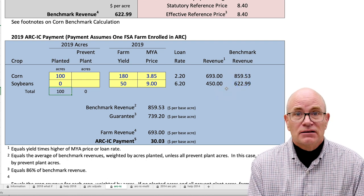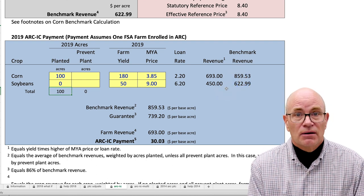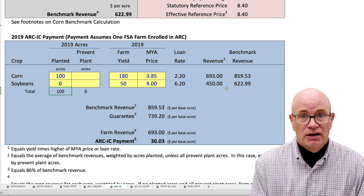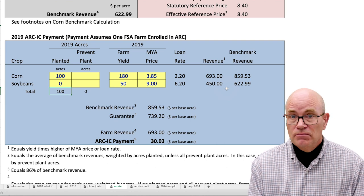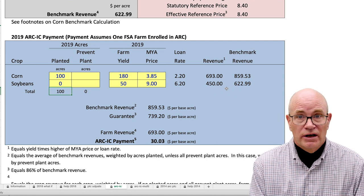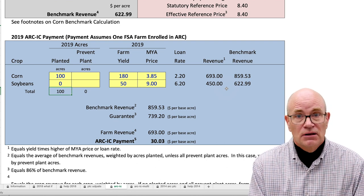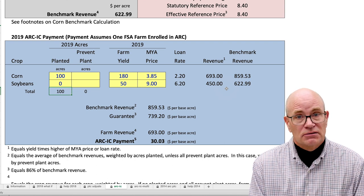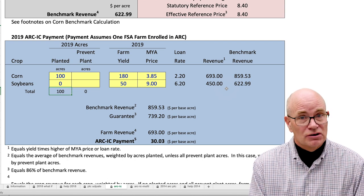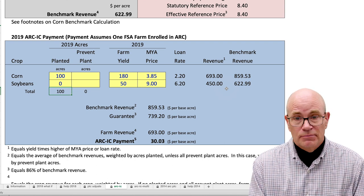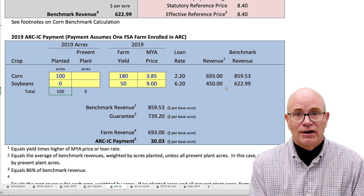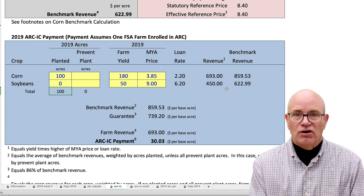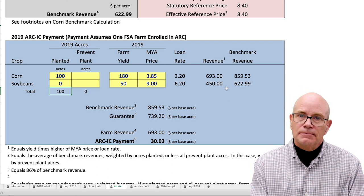That is the process for coming up with benchmark revenue. It's always a weighted average across crops on the farm, and if you have multiple farms, it's averaged across all the farms. Benchmark revenue calculation for ARC-IC.